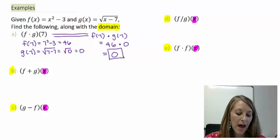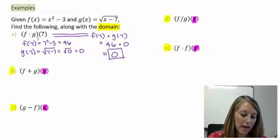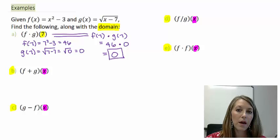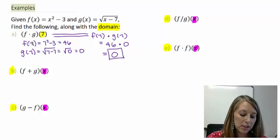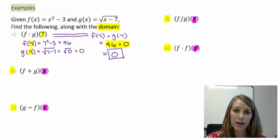So if it asks you for an operation evaluated at a specific number, the easier way to do it is to plug that number into the respective functions first, and then actually apply whatever operation we're trying to do, in this case the multiplication.